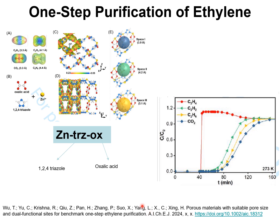In a recent development published in the AIChE Journal, it is reported that a metal-organic framework, zinc TRZOX — where TRZ stands for 1,2,4-triazole and OX is oxalic acid — is capable of a one-step purification of ethylene containing impurities such as acetylene and carbon dioxide. Polymer-grade ethylene can be produced with record productivity using this metal-organic framework.